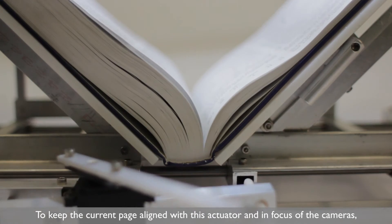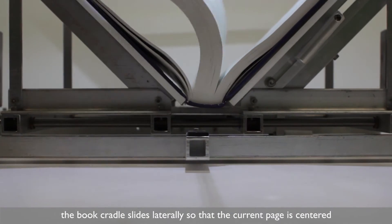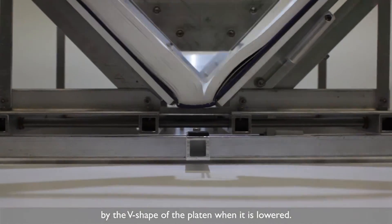To keep the current page aligned with the actuator and in focus of the cameras, the book cradle slides laterally so that the current page is centered by the V-shape of the platen when it is lowered.